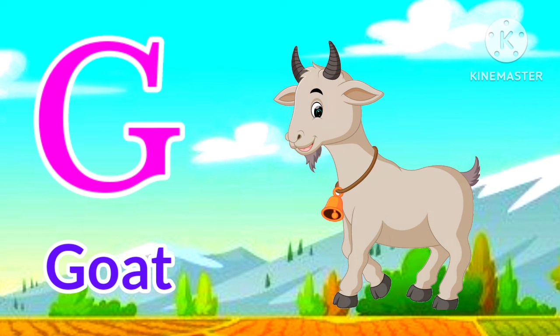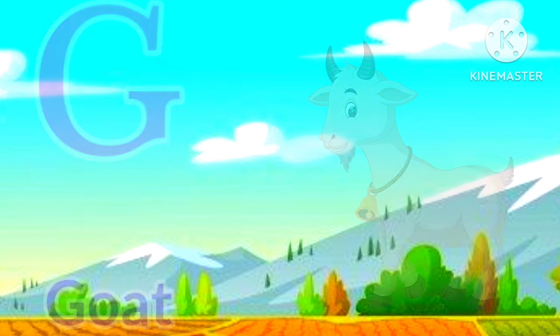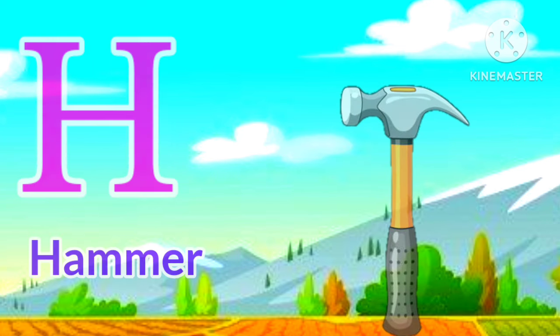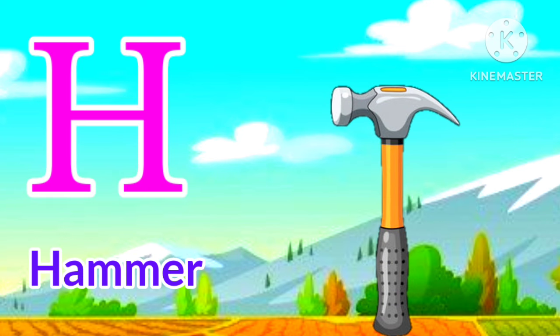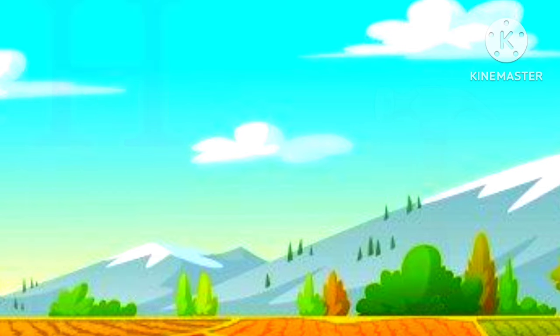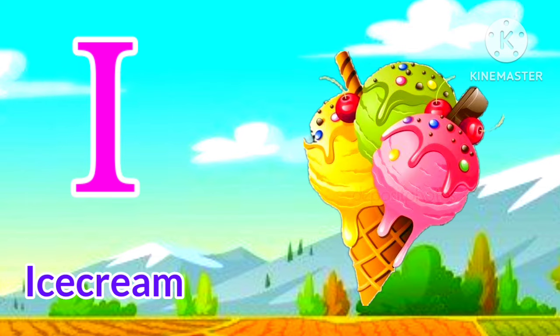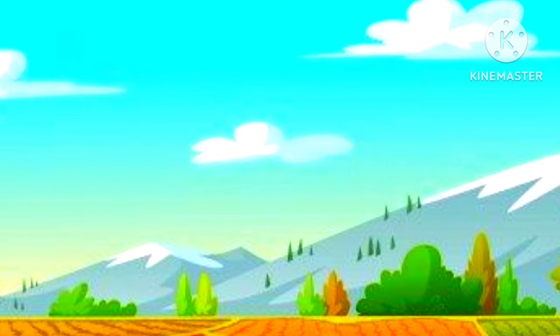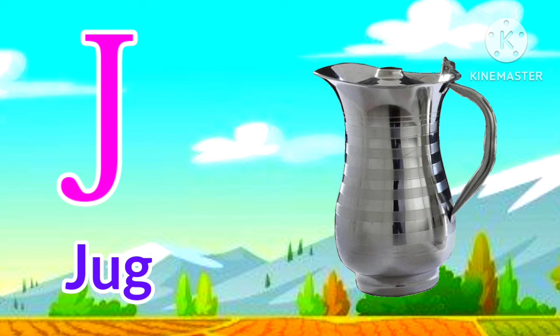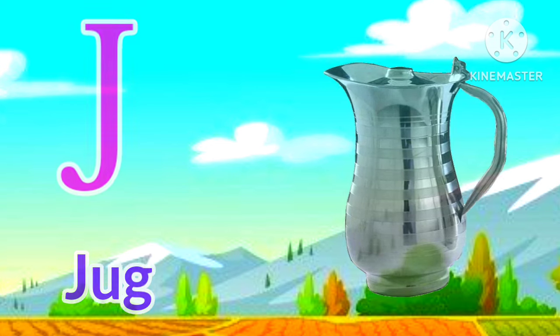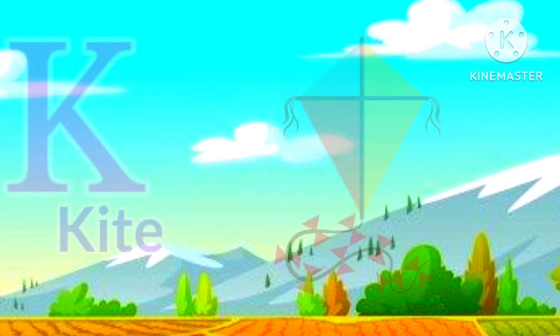G for goat, goat means bakdi. H for hammer, hammer means a thoda. I for ice cream, ice cream means malaybara. J for jug, jug means jug.